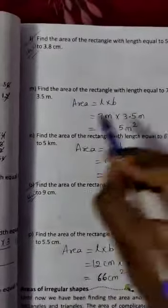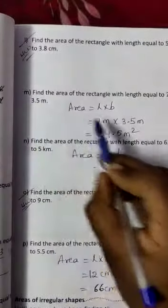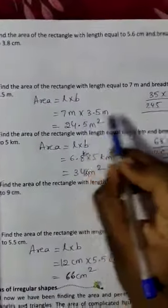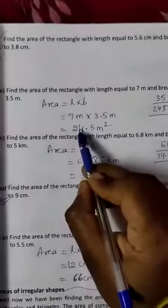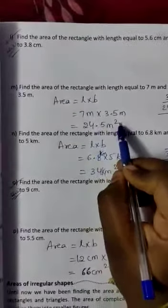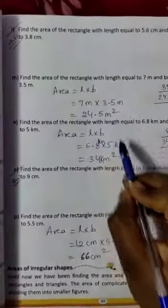Length is 7 meters, breadth is 3.5 meters. So, 7 × 3.5 — do 35 × 7 — giving 24.5 meter square. That is the answer.